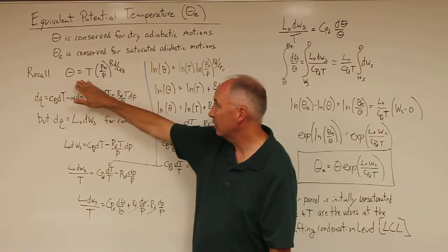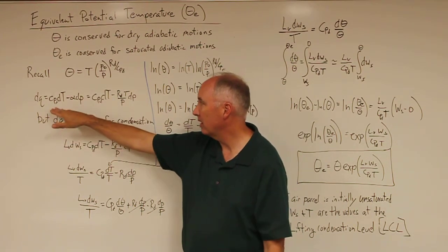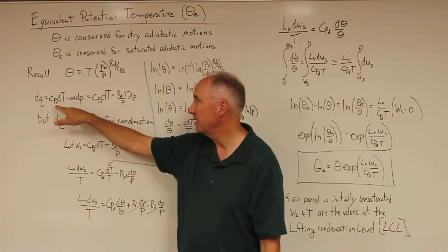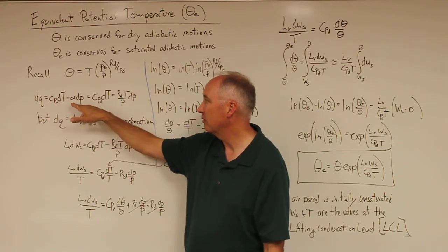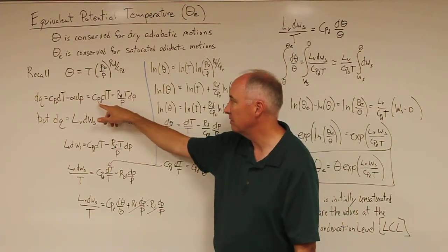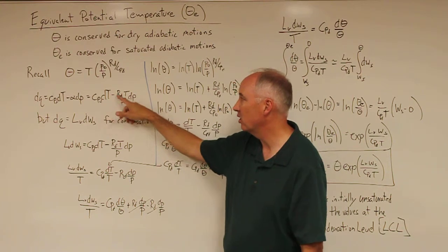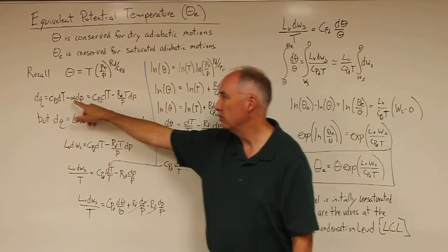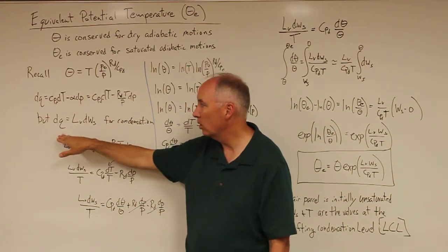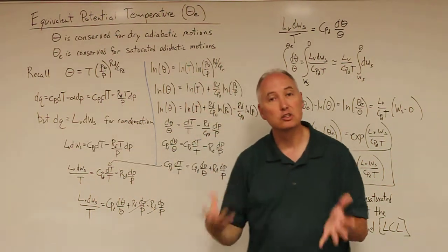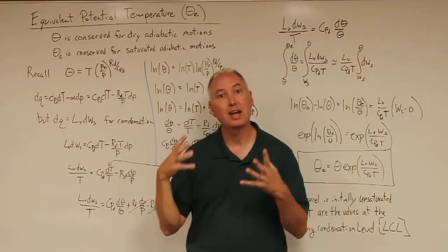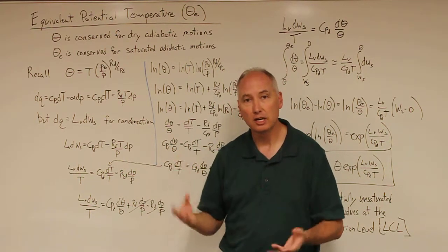We have our expression for potential temperature and the first law of thermodynamics: DQ equals C_pD DT minus alpha Dp. Using the ideal gas law, we can transform that into C_pD DT minus R_D T over P Dp. But in this pseudo-adiabatic process, DQ is not going to equal zero, because we have latent heat of vaporization from the condensation process.